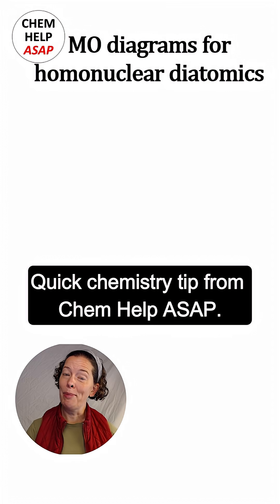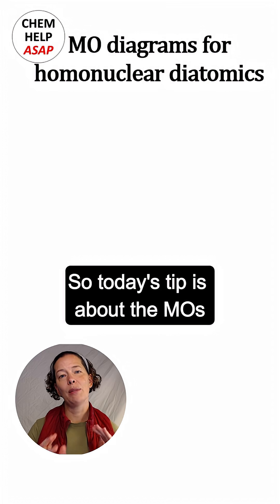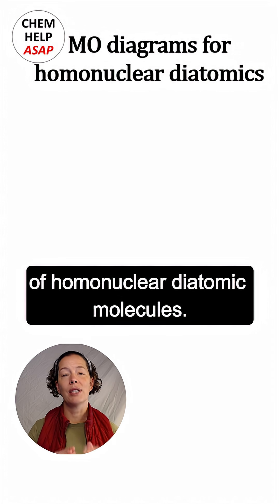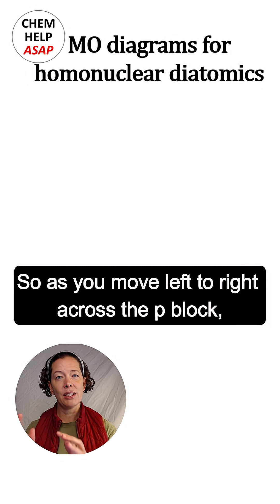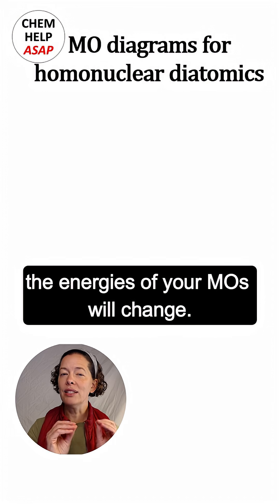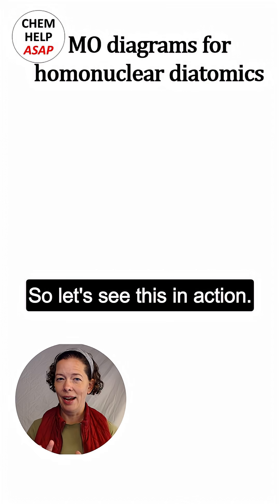Quick chemistry tip from Chem Help ASAP. So today's tip is about the MOs of homonuclear diatomic molecules. As you move left to right across the P block, the energies of your MOs will change. Let's see this in action.